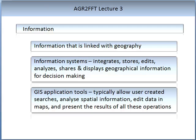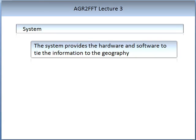There are a number of components of GIS which we will look at in some detail in the following slides. The first is information and information systems. The information in a GIS system is linked with geography. Information systems typically integrate, store, edit, analyse, share, and display geographical information, enabling decision making in some enterprise. GIS application tools typically allow user-created searches, analyse spatial information, edit data in maps, and present the results of all these operations. The system provides the hardware and software to tie the information of the geography together.